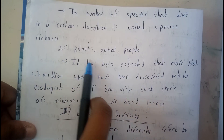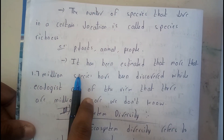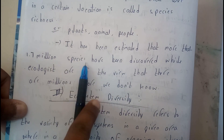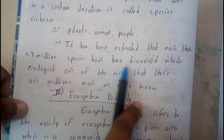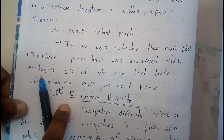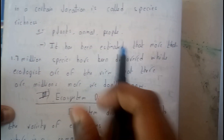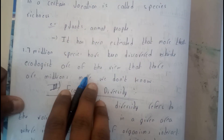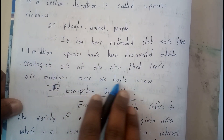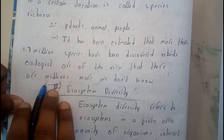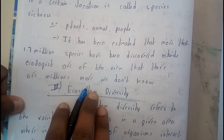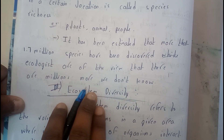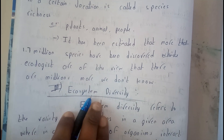Examples of species include plants, animals, and people. It has been estimated that more than 1.7 million species have been discovered, while ecologists view that there are millions more we don't know about.